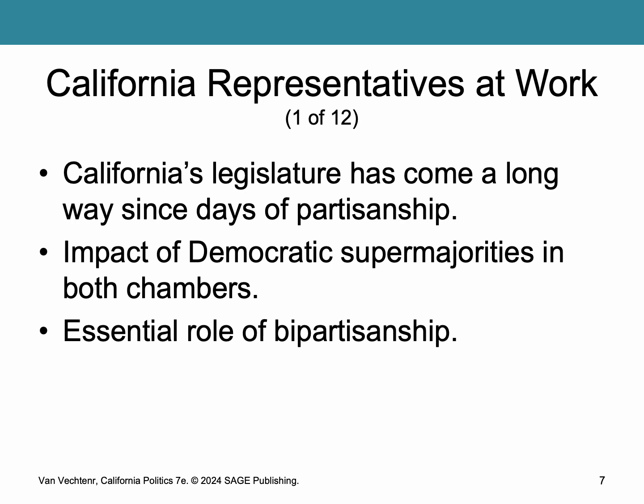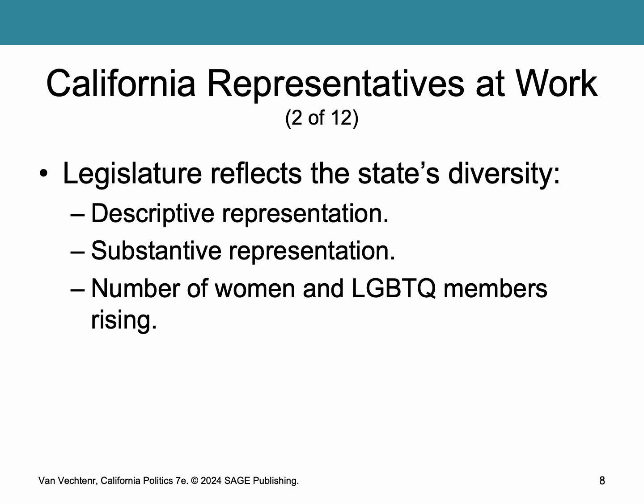Despite core differences, members of both parties do try to work together in committees, socialize outside of work, and often agree on issues for the greater good of California. Every term, hundreds of bills are passed on consent or unanimously. The legislature reflects the state's diversity: since 2016–2017, over half of Assembly members identify as racial or ethnic minorities, creating a majority-minority chamber, though the Senate remains mostly white. As of 2022, there were eight members of the LGBTQ caucus — the first officially recognized by a state legislature.